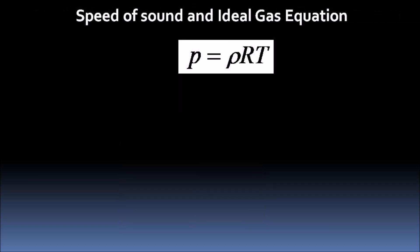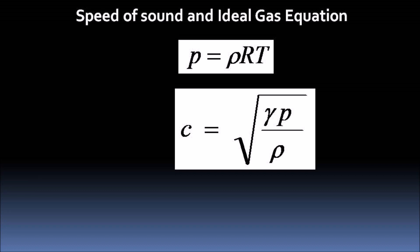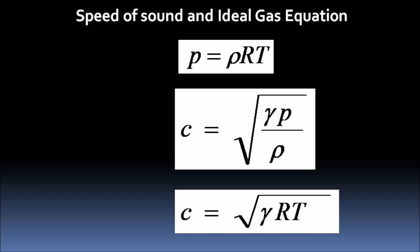The ideal gas equation is given as p is equal to rho r t where r is the gas constant and t is the absolute temperature in Kelvin. Note that r depends only on the molecular weight of the gas. We shall use this equation with the speed of sound equation and we get an expression for the speed of sound as c is equal to root gamma r t. This is by far the most commonly used expression for the speed of sound in engineering and science.